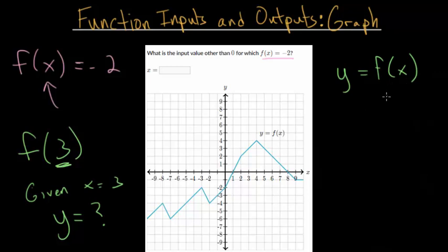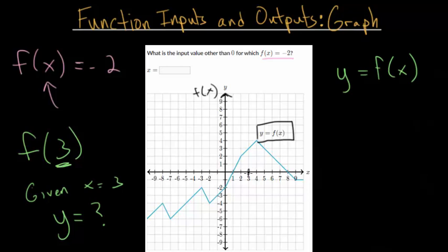Your function value is your y value. This y-axis could also be thought of as the f of x axis. This blue curve shows the y value of our function at different x values. So for the green question, f of 3 — given x equals 3, we go up to our curve, and that tells us that y equals 3. So the answer to the green question is that the y value is 3.